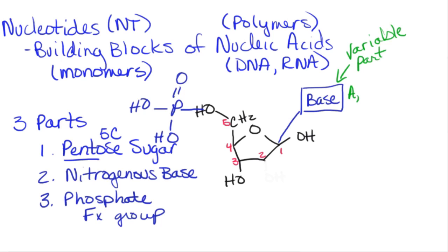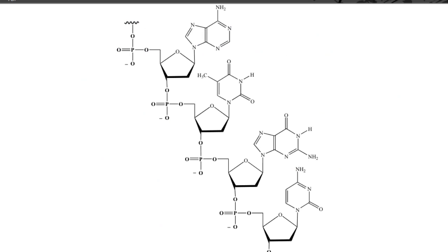I'm just going to write the letters rather than spell out the whole names. Those are the four bases you would find in DNA. In DNA, the sugar is deoxyribose — it's always going to be that in DNA nucleotides — and then we have the phosphate group as drawn. When we start to join these together, we will always be joining such that the phosphate group of one connects right here. This picture does a nice job of showing how these nucleotides are going to look once they are all joined together.